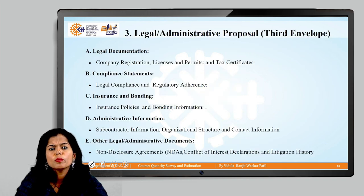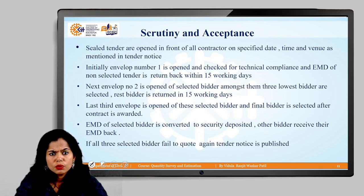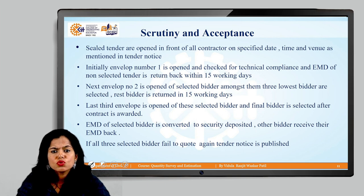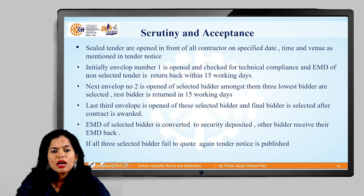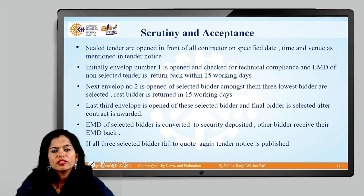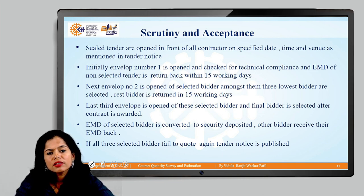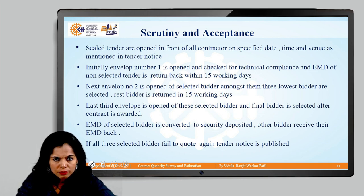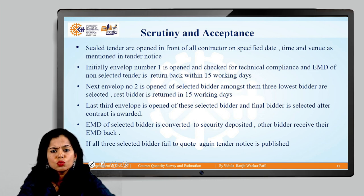The third envelope is only opened for the selected contractor. In the scrutiny process, a sealed tender is opened in front of all contractors on the specified date, time, and venue. Envelope one is opened first and checked for technical compliance and EMD. Non-selected contractors get their EMD back within 15 working days. The second envelope of compliant contractors is then opened to find the bid cost.